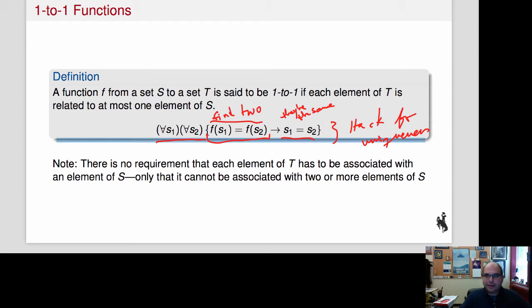So if I find two things, I discovered that it's actually the same one, right? That means that there can only be one because I can't actually get one and something else. So that's our standard hack for equality. And we use it here again. So if you find two points, f of s1 is equal to f of s2, then actually they're the same point, s1 is equal to s2.